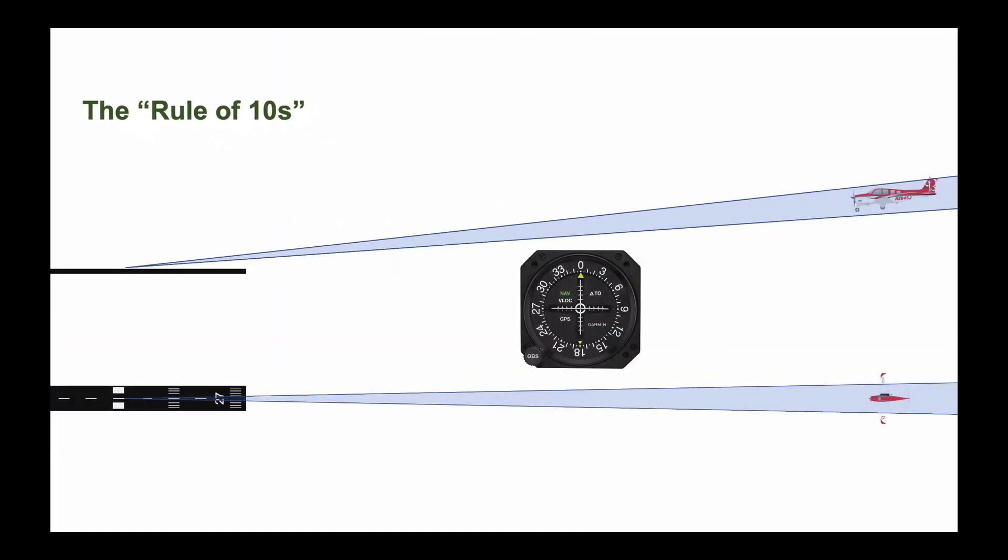The rule of tens is a set of tolerances, or boundaries, that you permit yourself to fly to maintain lateral and vertical guidance in an instrument approach. The rule of tens includes specific techniques to keep those tolerances within tight limits.